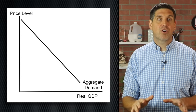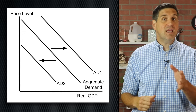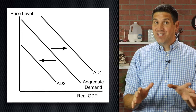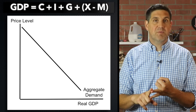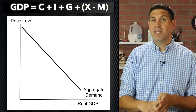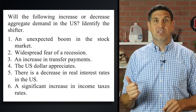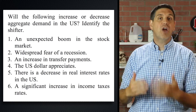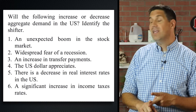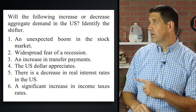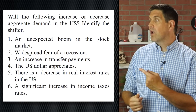Just like a market demand curve, an aggregate demand curve can shift. An increase is to the right, a decrease is to the left. And the good news is you already know the shifters — anything that affects consumer spending, investment spending, government spending, or net exports is going to shift the aggregate demand curve. The best way to help you learn this is to have you practice. So here are six scenarios — your job is to figure out what's going to happen to aggregate demand for the United States. Will it increase or decrease, and what's the shifter? Pause this video and see if you know what's going to happen to aggregate demand for each one of these situations.